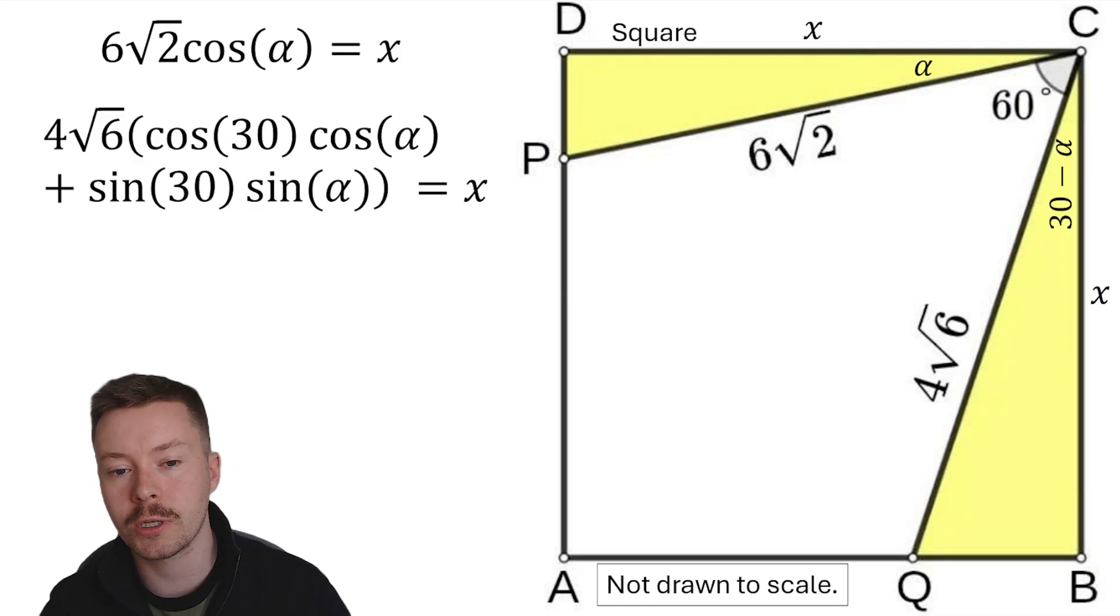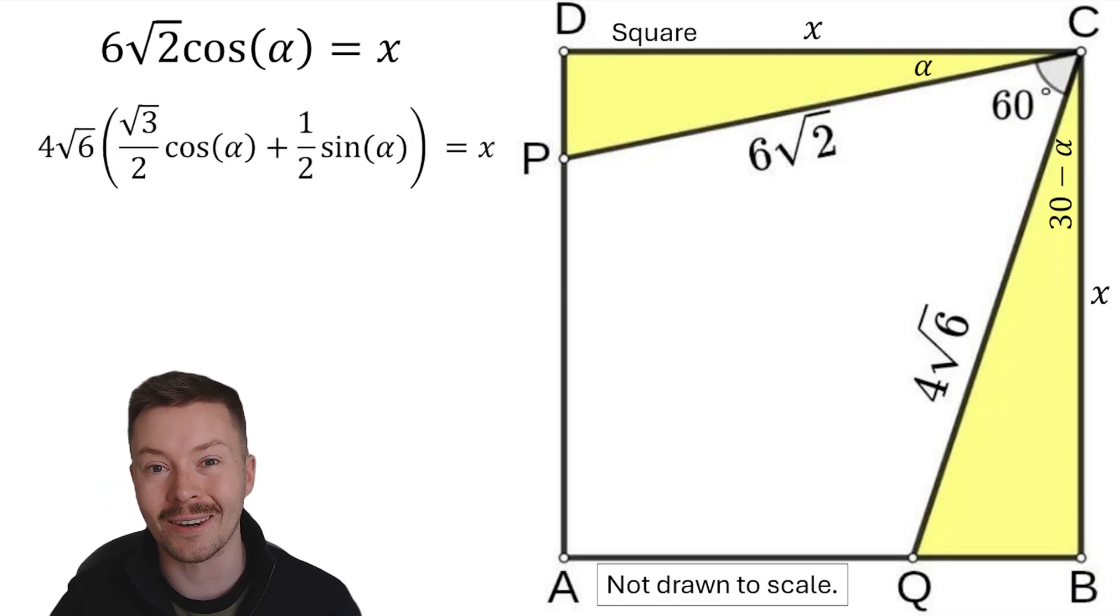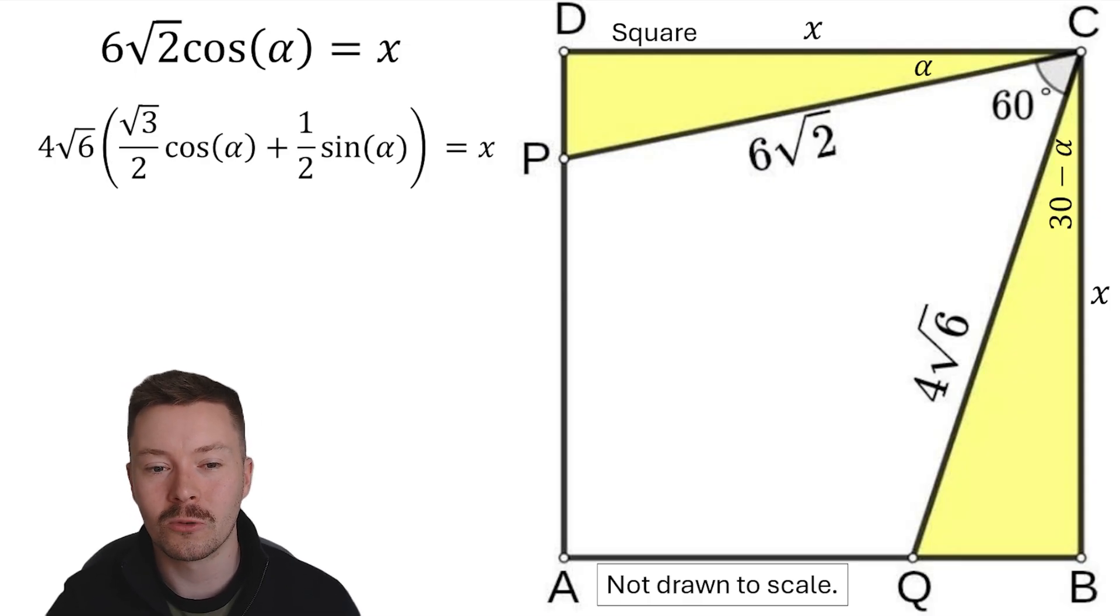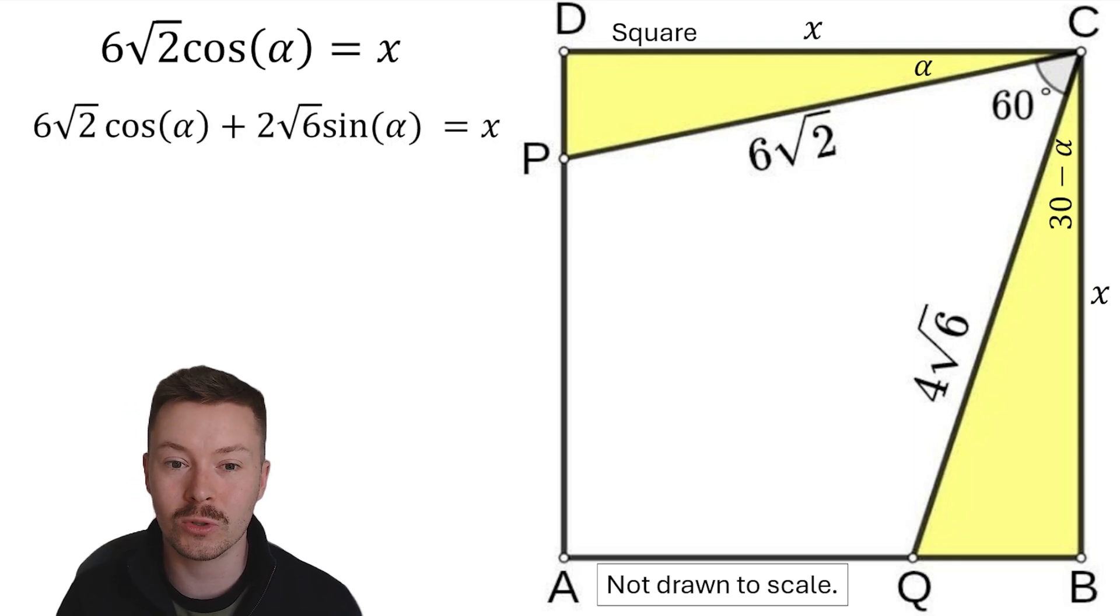Now I'm going to work out the values of cos 30, sine 30, and substitute those in. So I get root 3 over 2 times cos alpha plus a half times by sine alpha. I'm going to times both of those things by 4 root 6 and get rid of the brackets. So I get 6 root 2 cos alpha plus 2 root 6 sine alpha is equal to x.